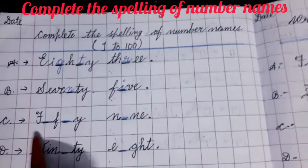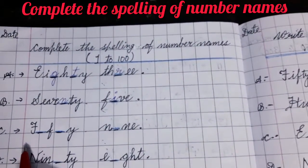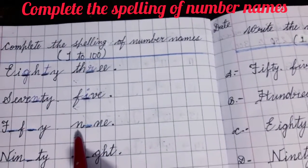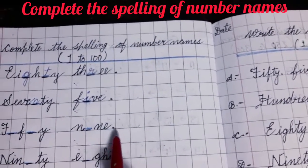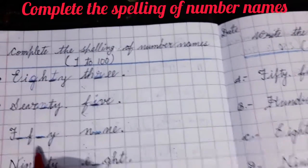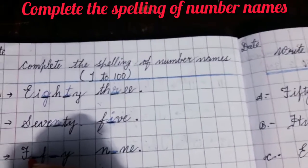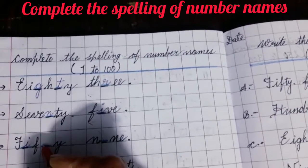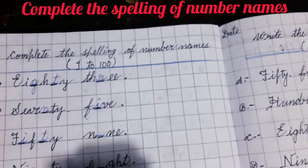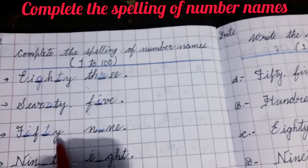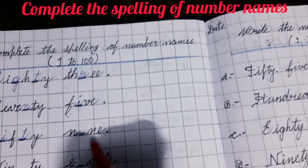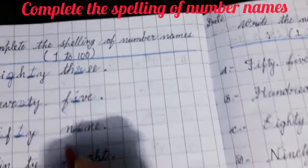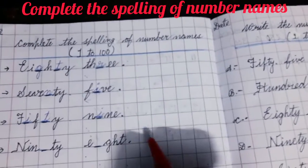Now come to the next. Write C, put an arrow. F blank space Y — which word is this? This is 50 — FIFTY. So after F, you will fill in I, then F is written again, fill in T, Y is written — FIFTY. Then N blank space N E — this is the spelling of 9 — NINE. N is written, you will fill in I. N I N E — 9. So this is 59 — FIFTY NINE.